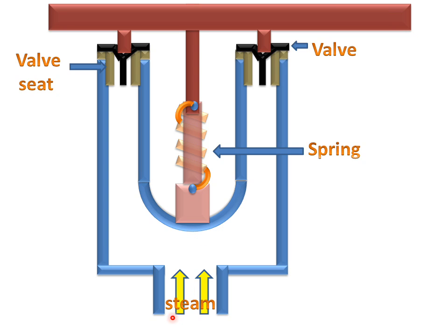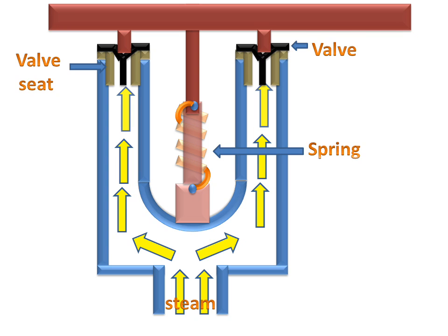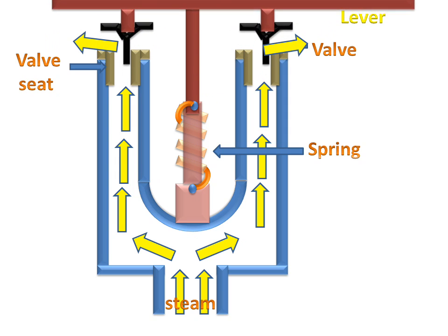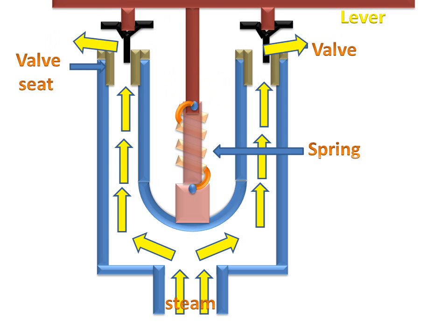When steam enters the section, it will be separated into two sections and will go towards the valve. By the pressure of the steam, the valve will go upward.